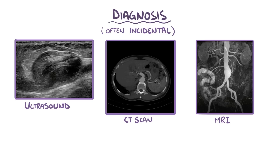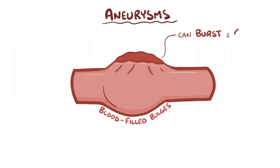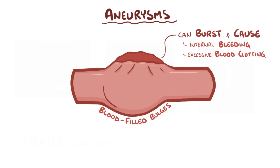If an aneurysm is present and large enough to cause risk to an individual, it can be treated surgically. As a quick recap: aneurysms are blood-filled bulges that form in weakened areas of the blood vessel walls. Left untreated, aneurysms can burst, causing uncontrolled internal bleeding or excessive blood clotting. Based on the size and location of an aneurysm, surgical treatment may be necessary.